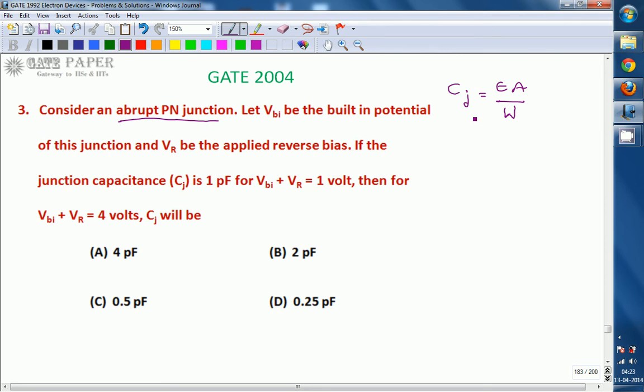So W is the distance between the plates, which is the width of potential barrier. You can visualize in this way. This is depletion region and it is P side, this is N side, where you will get negative ions over here, positive ions over here. The W is the width of depletion region.